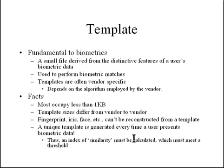A unique template is generated every time a user presents biometric data to the system. Every time you put your right thumbprint on a biometric system, it generates a template that's different from the previous one. It's almost like every time you typed your password, it would be slightly different, but the system would still recognize it's the same user.